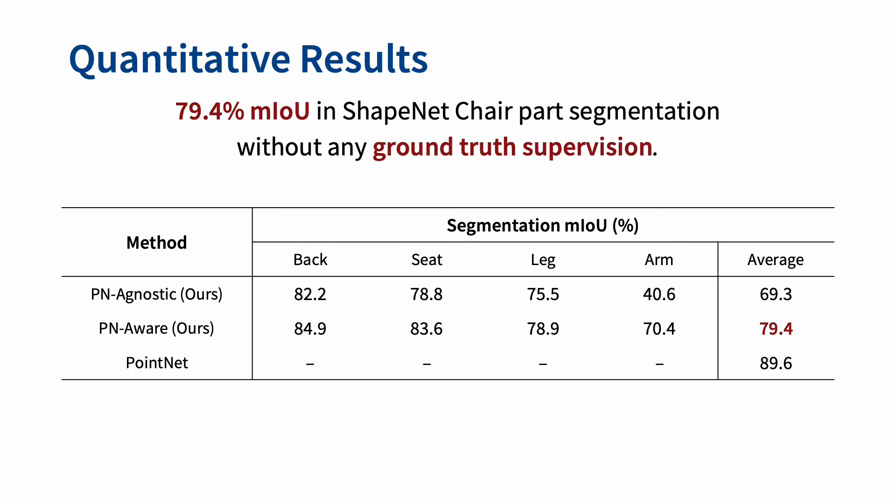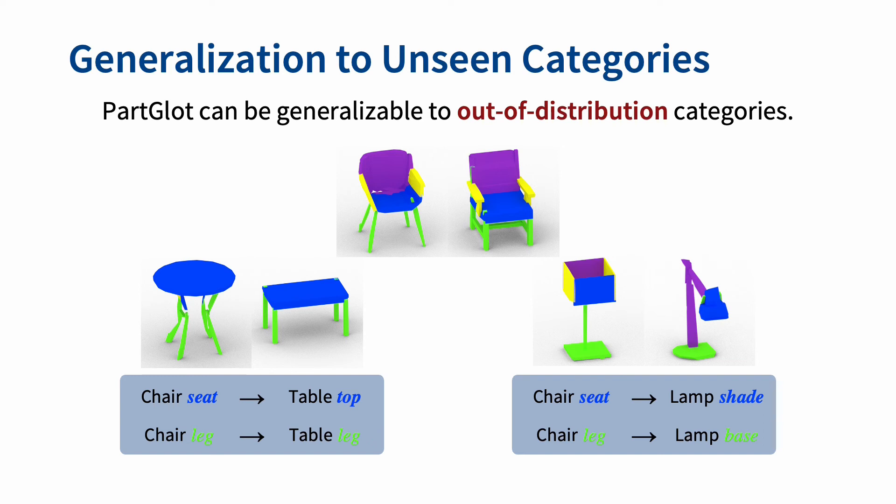Quantitatively, our PartGlot also achieves 79% mIOU in the ShapeNet chair part segmentation, which is comparable to the results of a supervised method.